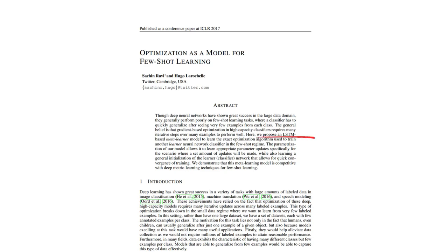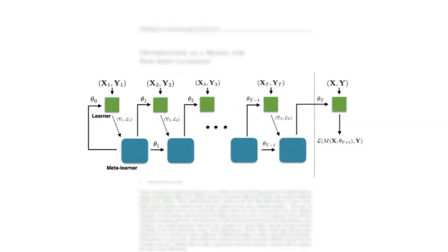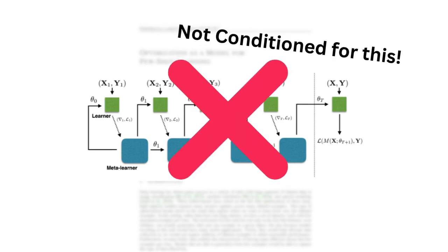In this setup, there were two models: a meta-learner that is training another learner on very few examples to complete a task. What is surprising in the context of large language models is that they are not especially conditioned for this meta-learning.